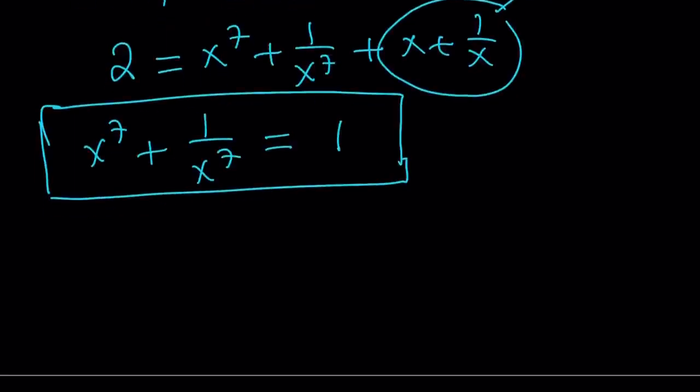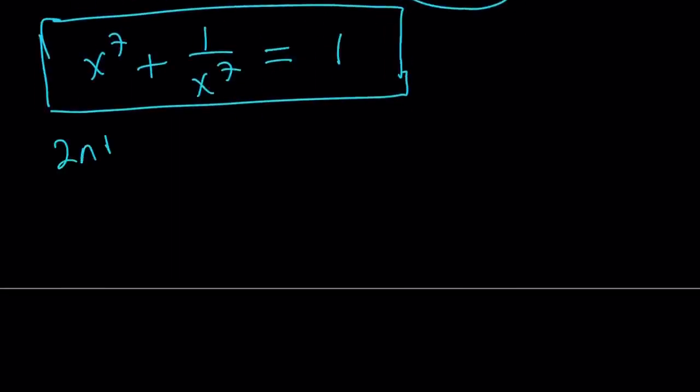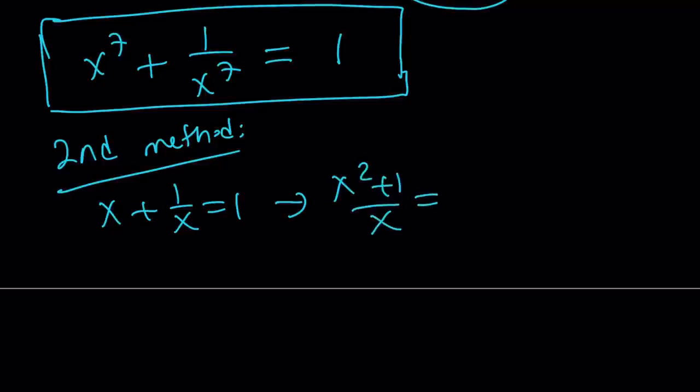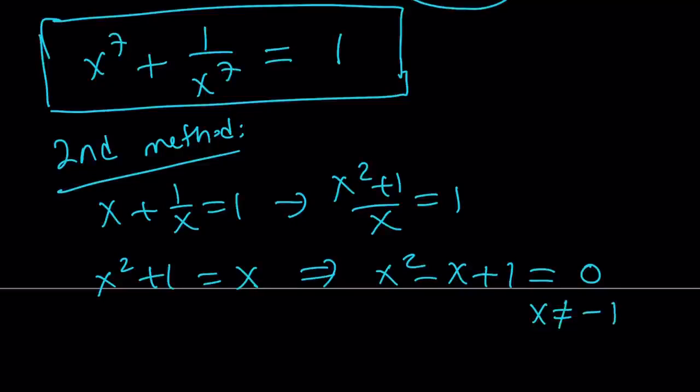This is the second method. I hope you don't mind. The second method involves the following. I'm going to make a common denominator, then I'm going to get x squared plus 1 over x equals 1. Multiply both sides by x. Everybody knows that x cannot equal 0 here. X squared plus 1 equals x. From here I'm going to get x squared minus x plus 1 equals 0, which is super duper awesome. Notice that x does not equal negative 1.